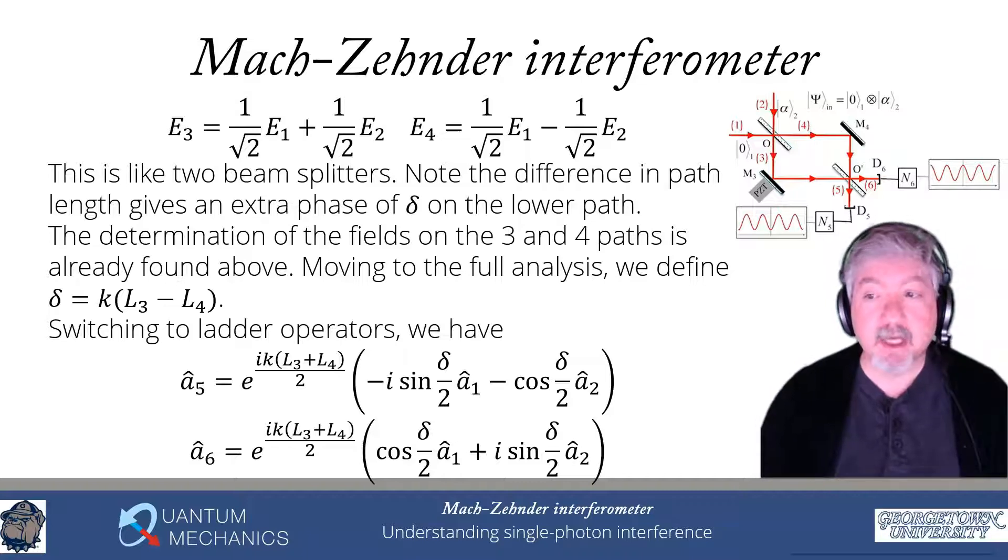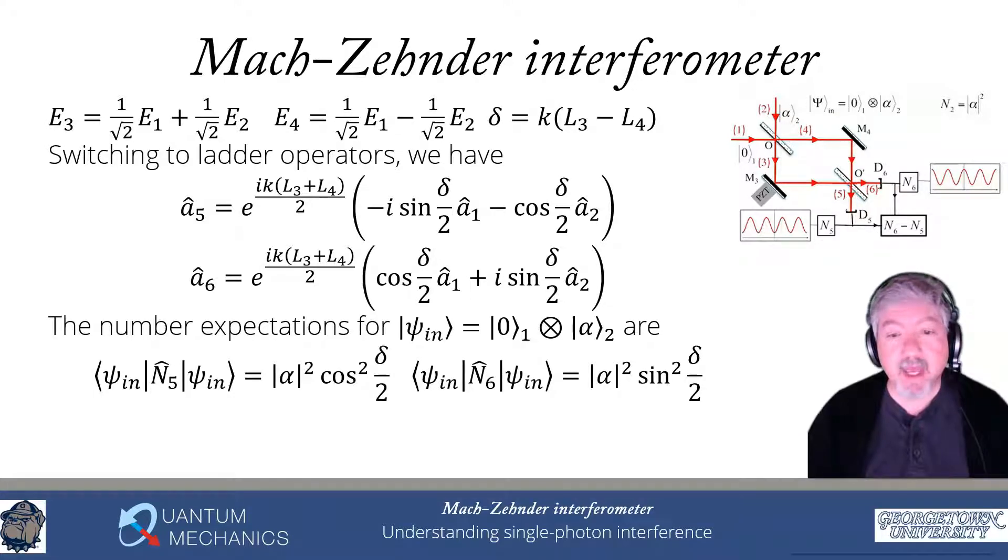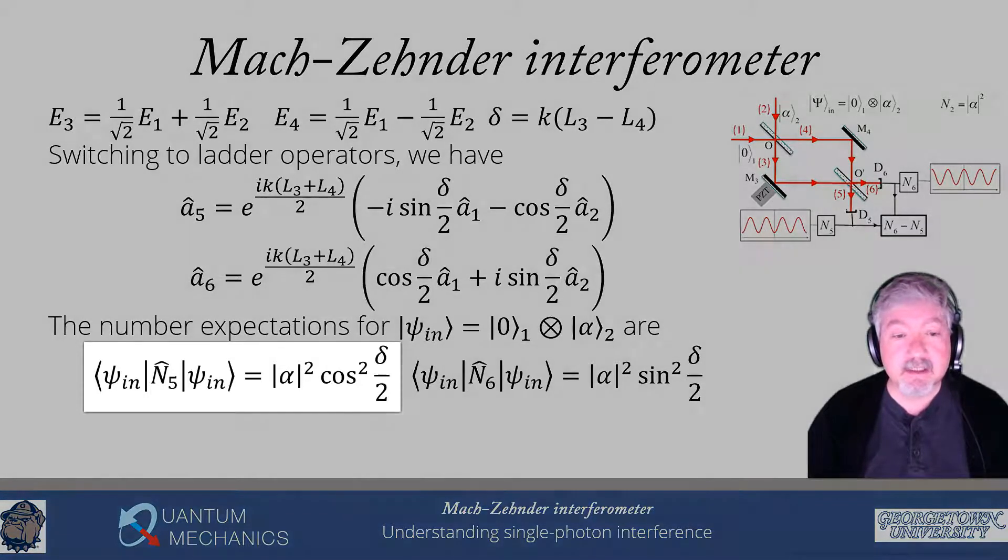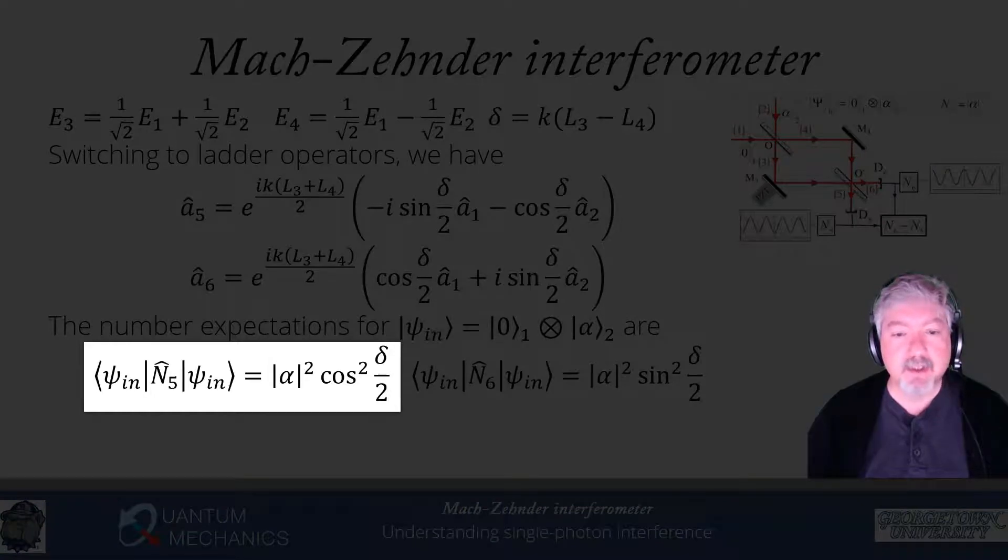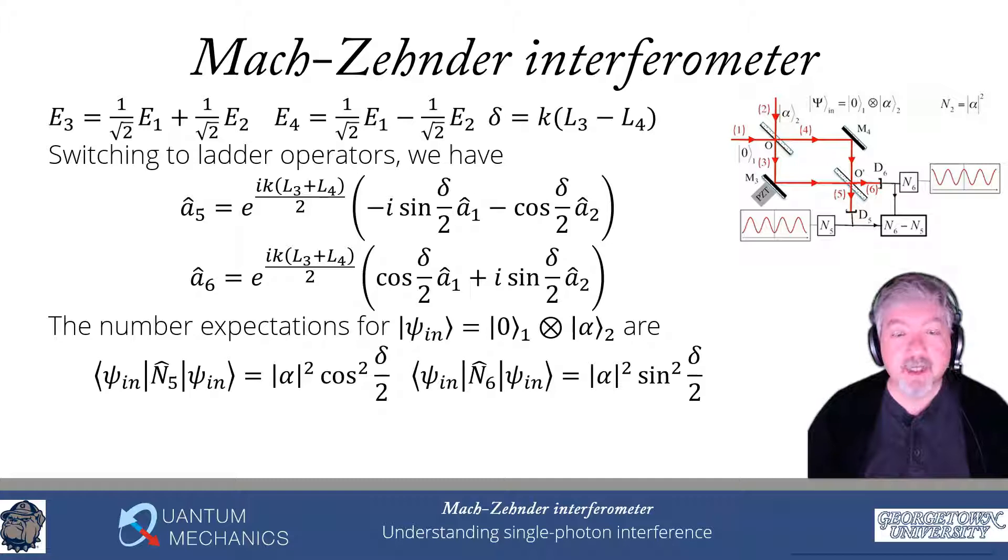Now from this, we can calculate expectation values. We're going to be measuring the number operator with an input state psi in, which has a vacuum on port 1 and a large amplitude field on port 2. Just calculating A dagger 5 A5 and taking the expectation value, noting that the input state on port 2 is a classical state, we get modulus alpha squared cosine squared delta over 2. And calculating A dagger 6 A6 and calculating that expectation value, we get modulus alpha squared sine squared delta over 2. You can fairly easily see that's what's going to come out just by looking at the different expectation values and the fact that the A operator annihilates the vacuum on the right and the A dagger operator annihilates the vacuum on the left. So the only terms that can contribute are the A2 dagger A2 terms in both of those expressions, and one is multiplied by a cosine, the other by a sine.